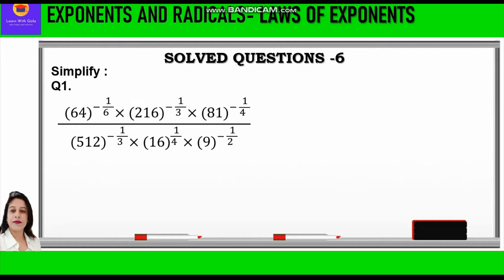Now let's start with the question. It is given: 64 raised to power minus 1 by 6, into 216 raised to power minus 1 by 3, into 81 raised to power minus 1 by 4, upon 512 raised to power minus 1 by 3, into 16 raised to power 1 by 4, into 9 raised to power minus half.